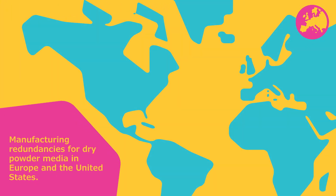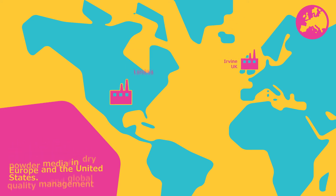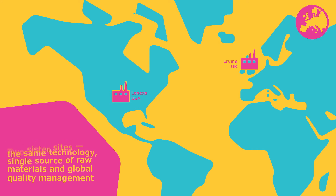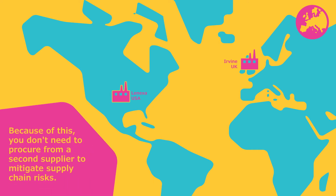We provide manufacturing redundancies for dry powder media in Europe and the United States by offering two sister sites, the same technology, single source of raw materials, and global quality management. Because of this, you don't need to procure from a second supplier to mitigate supply chain risks.